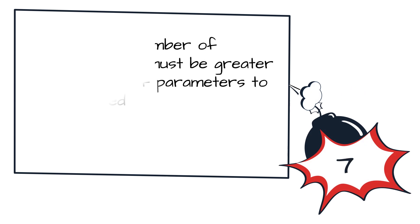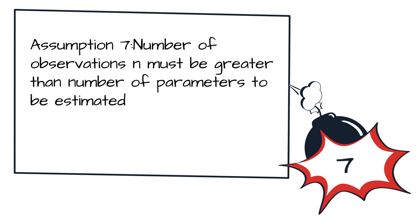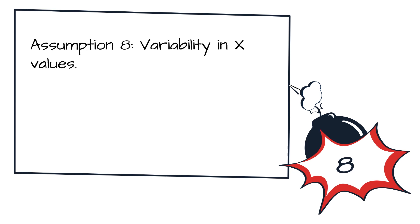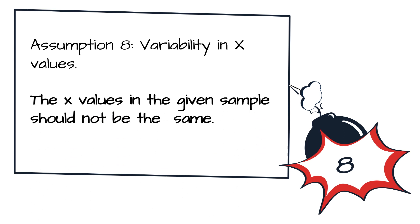The seventh assumption states that there should be variability in x values. This means that our x values should not all be the same. If there is very little variation in x, then we will not be able to explain the variation in y. Hence, we need high variability in our x values.